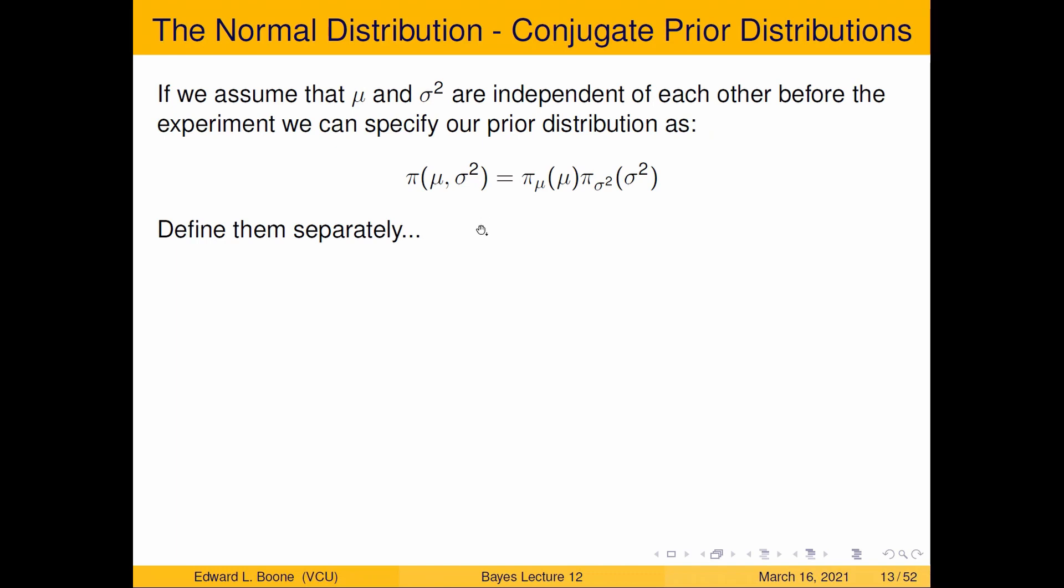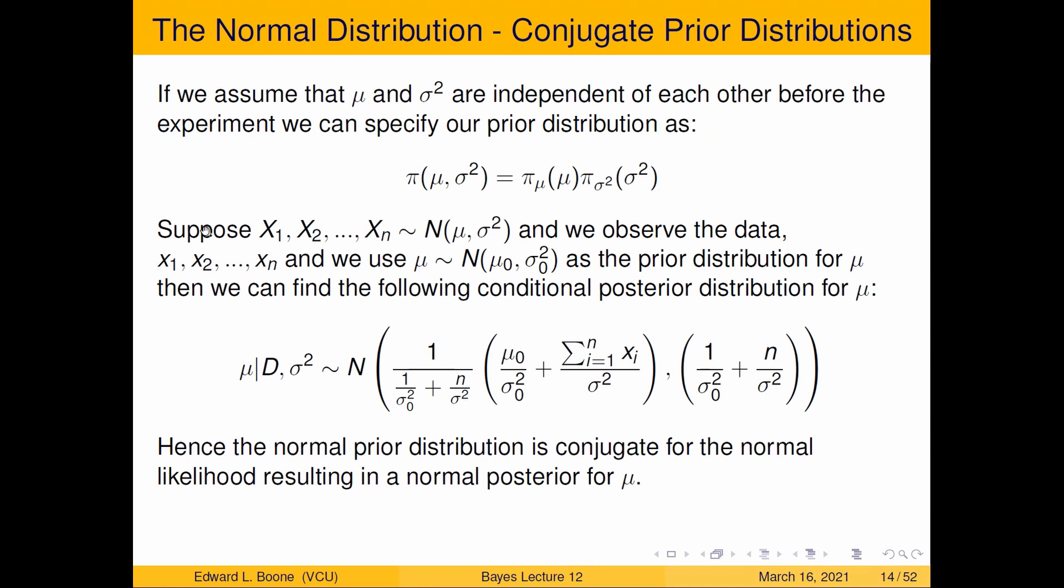All right, and if we do that, well, we can use this idea of conjugacy. Okay, so let's suppose X1 through Xn comes from a normal distribution with mean mu sigma squared as its variance. And we observe the data of the small x1 through small xn. And for our prior distribution, we're going to use mu follows a normal distribution with its own mean mu zero and its own variance sigma squared zero as our prior distribution for mu. Then we can find the following conditional posterior distribution. And I say it's conditional because it requires us to know sigma squared. So we get mu given the data and sigma squared follows a normal distribution. So it's Gaussian. That makes it conjugate, right?